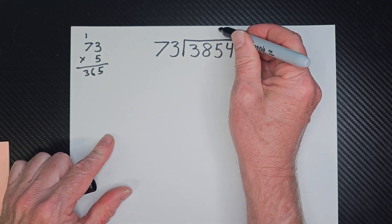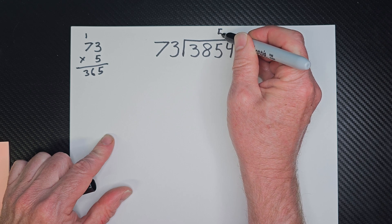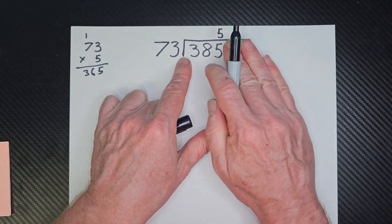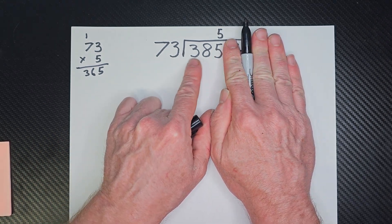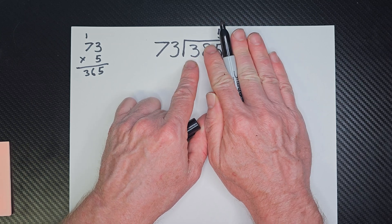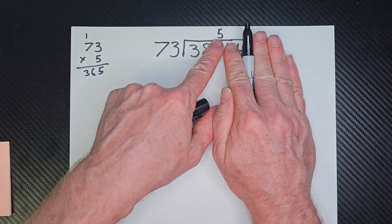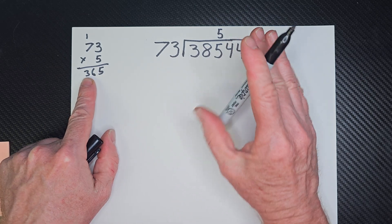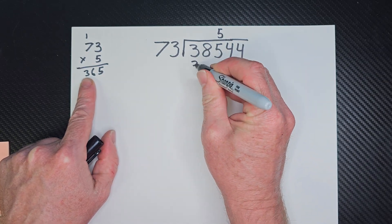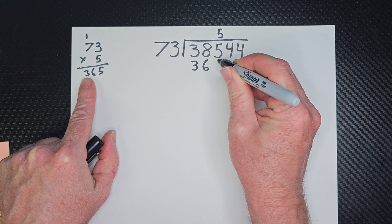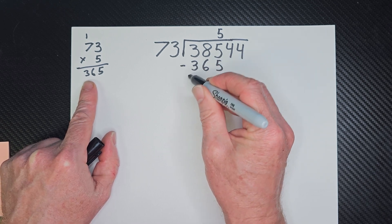So I'm going to go ahead and put the 5 right above here, because I'm dealing with this number right here. That's what I'm trying to divide now, not the 38, but I'm doing 385. So 5 times 73 is 365. So I'm going to put 365 right here, and I'm going to go ahead and subtract that.